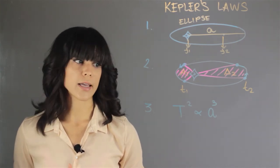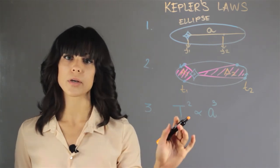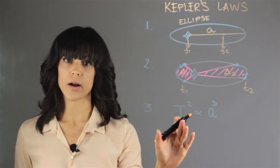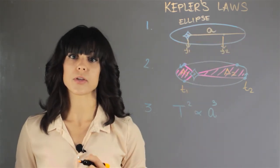The third law is the orbital period. That means the orbital period of a planet squared is always proportional to the semi-major axis of the planet cubed.